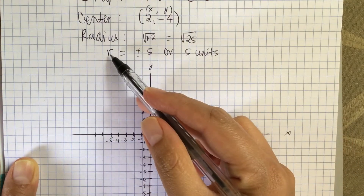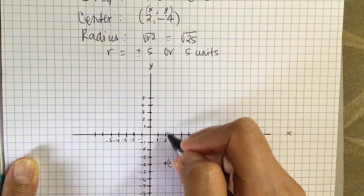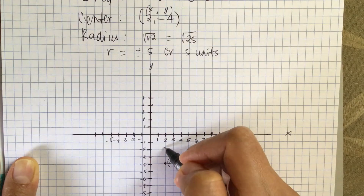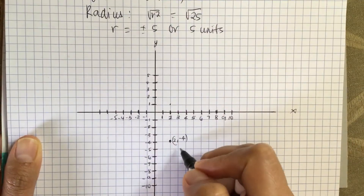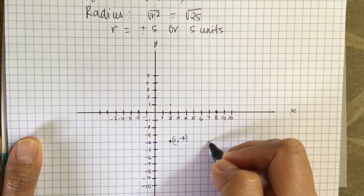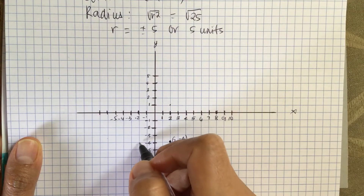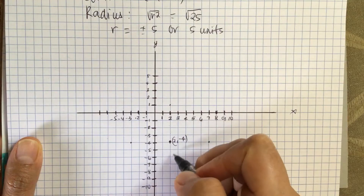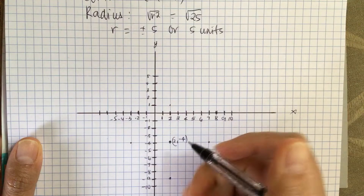Now the radius r is equal to 5, so that means we go up 5 — 1, 2, 3, 4, 5. So here's a point. And then we go this way — 1, 2, 3, 4, 5. So here's another point. Now we go to the left — 1, 2, 3, 4, 5. And then on the bottom — 1, 2, 3, 4, 5. Then we connect our dots.